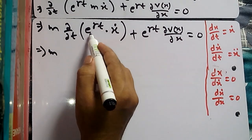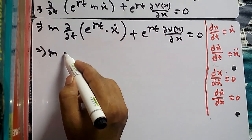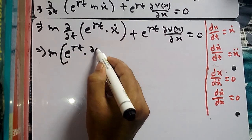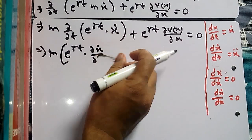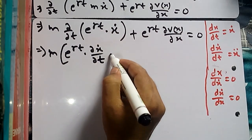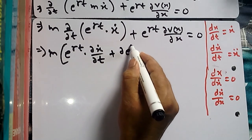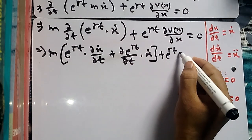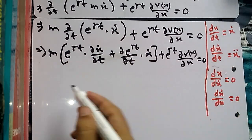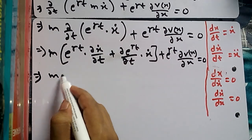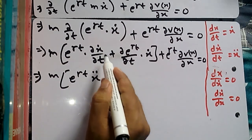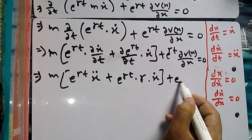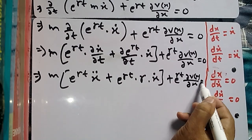Applying the product rule to d/dt of [e^(gamma t) times x-dot]: differentiate the first term (e^(gamma t)) to get gamma e^(gamma t), times the second term x-dot; plus the first term e^(gamma t) times the derivative of x-dot which is x-double-dot. So we get: m[e^(gamma t) x-double-dot plus e^(gamma t) gamma x-dot] plus e^(gamma t) ∂V/∂x = 0.